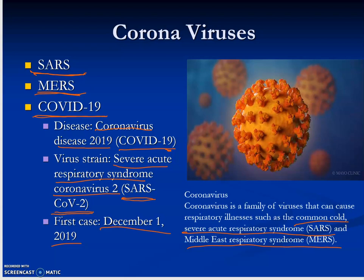For your pathogen sheet, the name of the disease is Coronavirus Disease 2019, or COVID-19. The virus that causes the disease is Severe Acute Respiratory Syndrome Coronavirus 2, or SARS-CoV-2. So the name of the virus is SARS-CoV-2, and the name of the disease it produces is COVID-19.